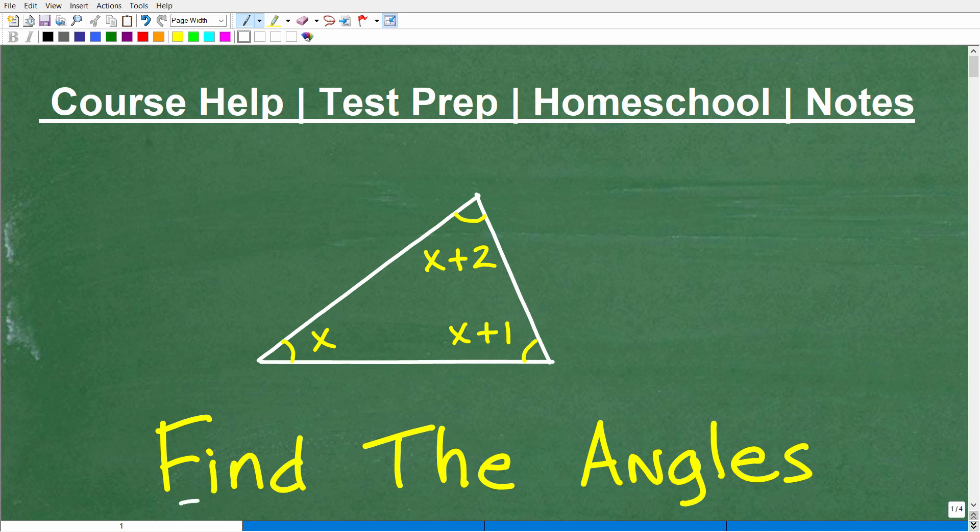Okay, let's go ahead and find the angles of this triangle. I'm looking here, you can see I have an angle that's x degrees, we have x plus 1 and x plus 2. So these would represent angle measures in degrees, and we want to find the actual angles.